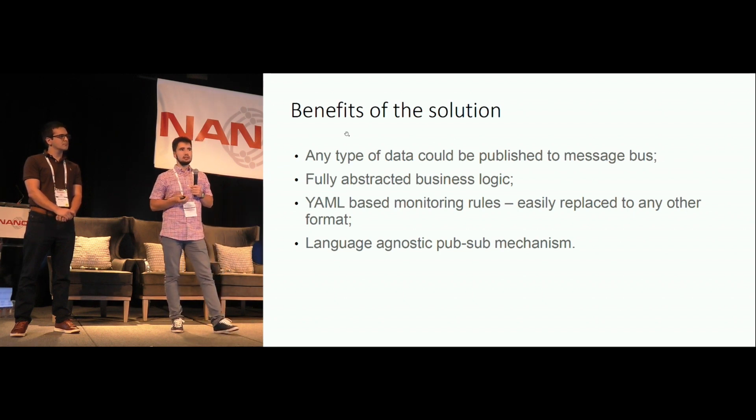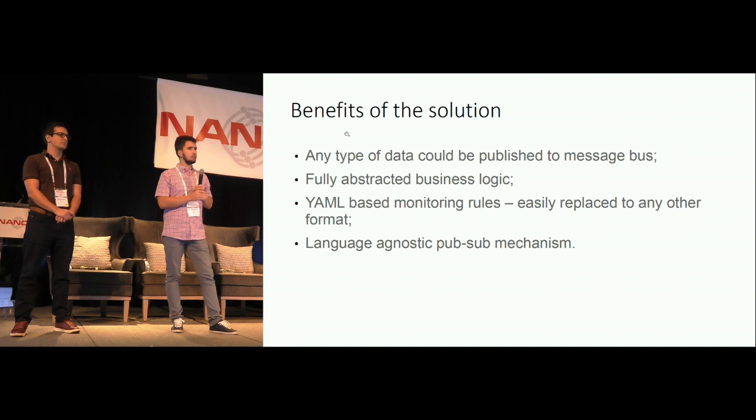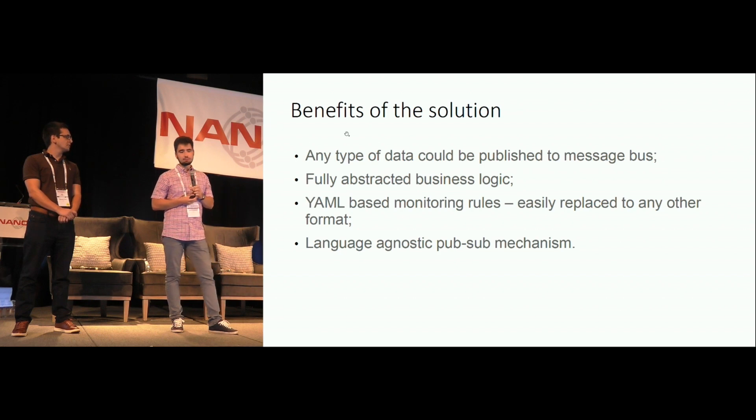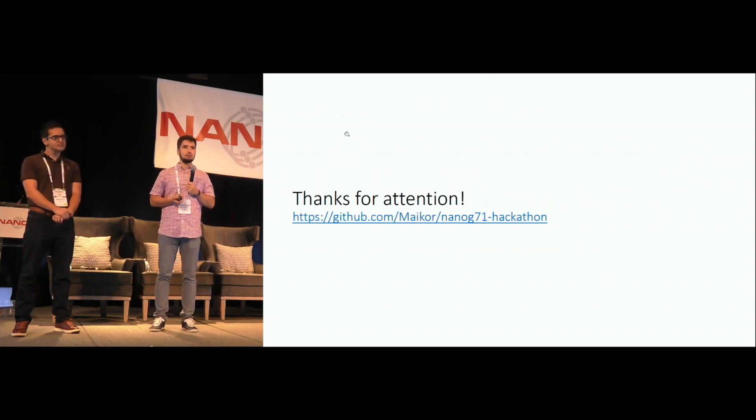The publish-subscribe mechanism is language agnostic — some of our hacks were in Golang and some pieces in Python. The code is available on the GitHub repo. The technologies we used are Golang, Python, gRPC, OpenConfig, and the Service Layer API, alongside GoBGP. If anyone is interested, take a look at the GitHub repo or come and talk to us.